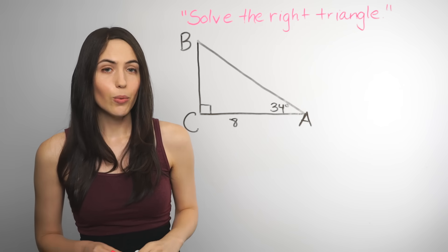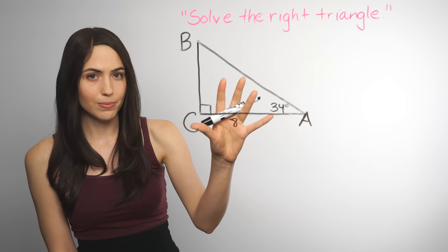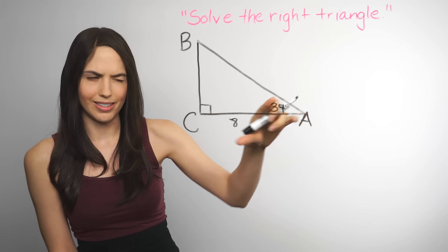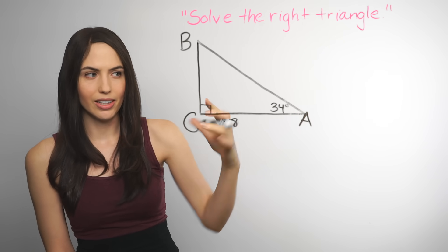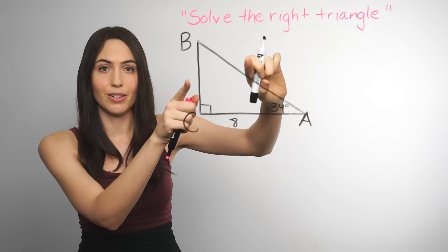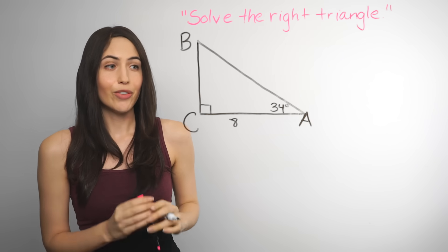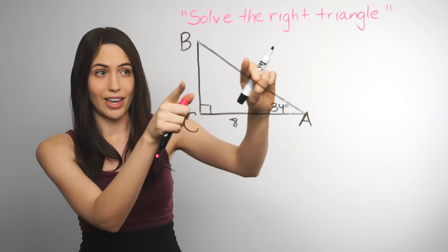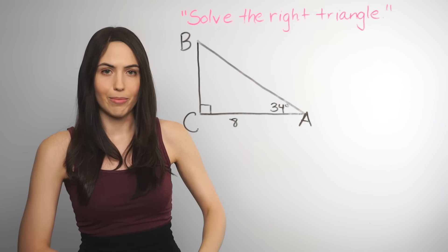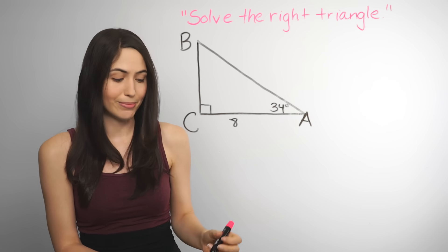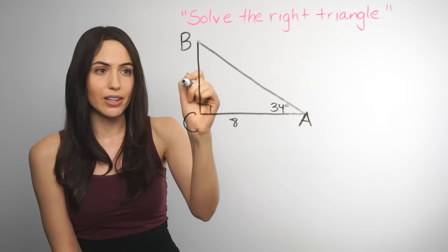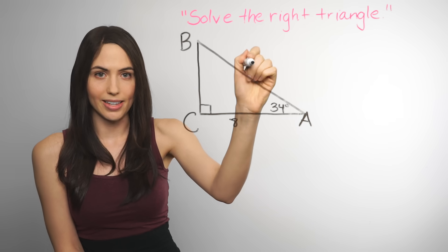If you have a right triangle and you know at least one side and an angle that's not the right angle, you can use a trig function to find the sides that you don't know. The first thing to do is to label those sides you're looking for. Give them names — they deserve that much, the dignity of having a name. You can use whatever letters or variables you want. I'm going to use lowercase a and lowercase c.